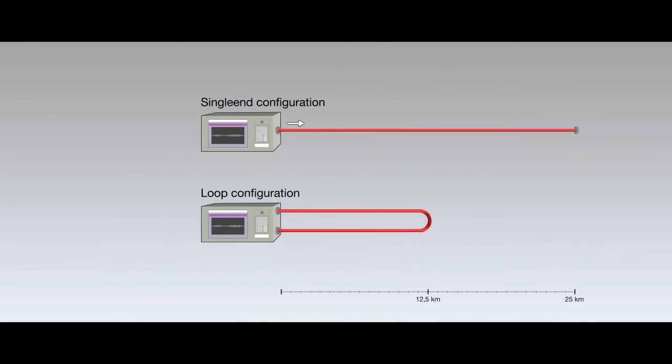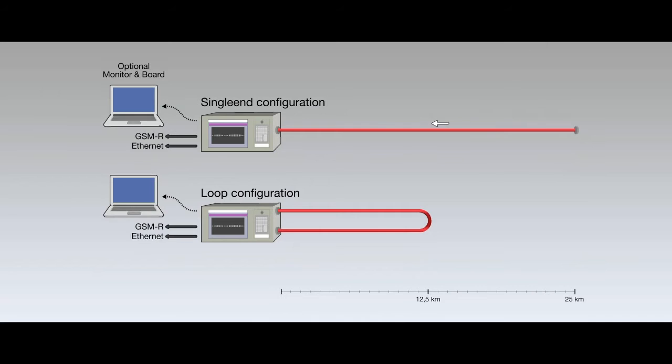There are two measurement configurations, namely single-end and loop configurations. In the single-end scheme, only one fiber end is connected to the laser. In the loop scheme, both fiber ends are connected to the laser.